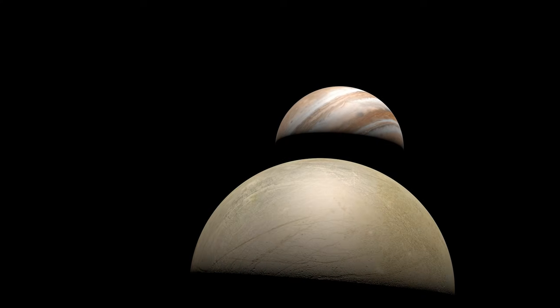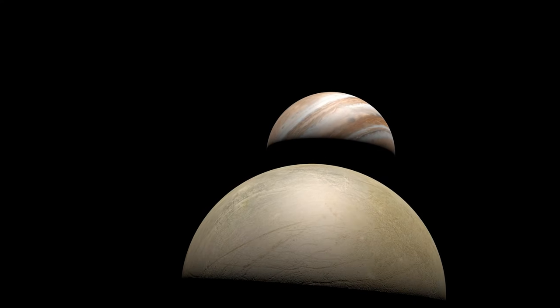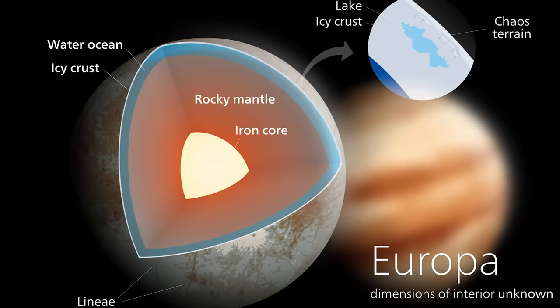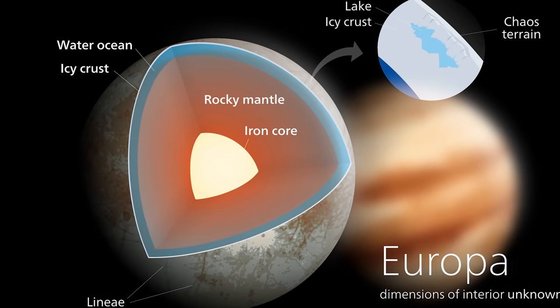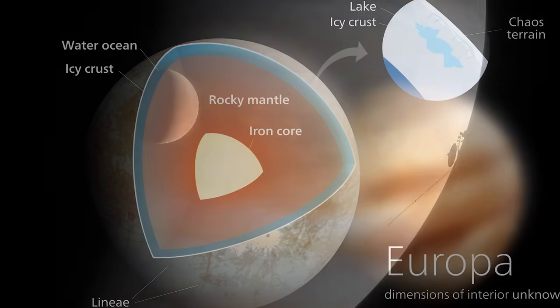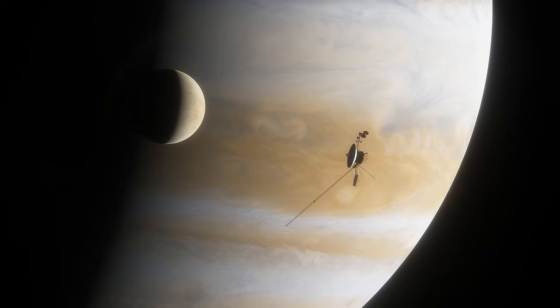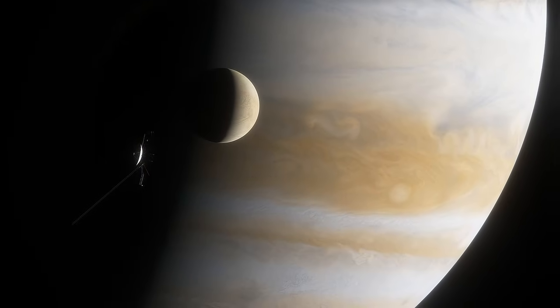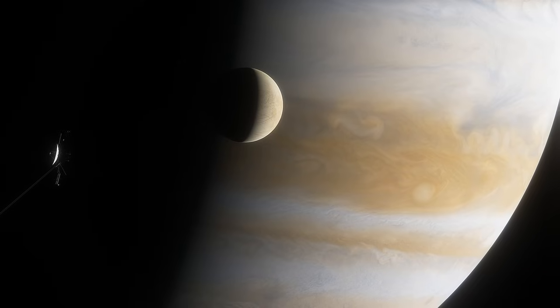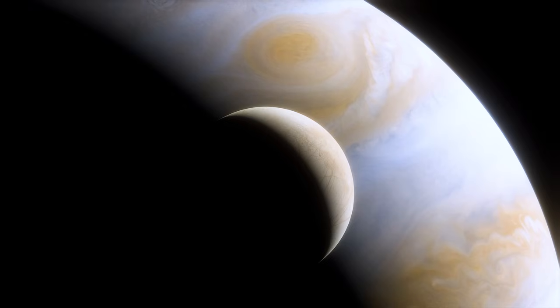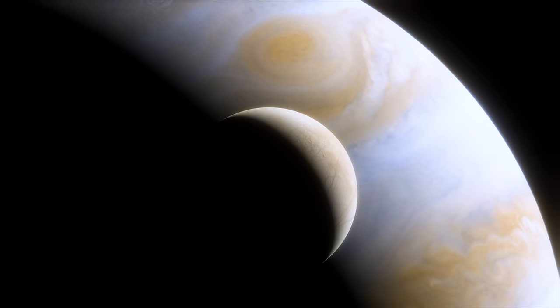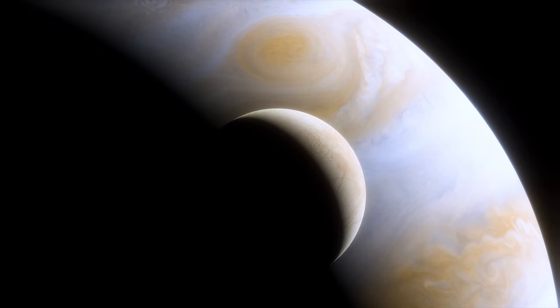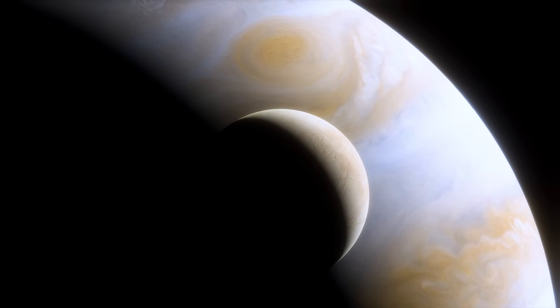Europa is intriguing due to the possibility of what lies beneath its solid icy surface. A global ocean between the stony mantle and the water ice crust may exist. In 1979 and the late 1990s, the Voyager and Galileo spacecraft revealed that a fantastic world lies beneath the ocean's surface for the first time. A dramatic change in the moon's magnetic field occurred between these missions, which is unthinkable without electrically conductive fluid beneath its surface.